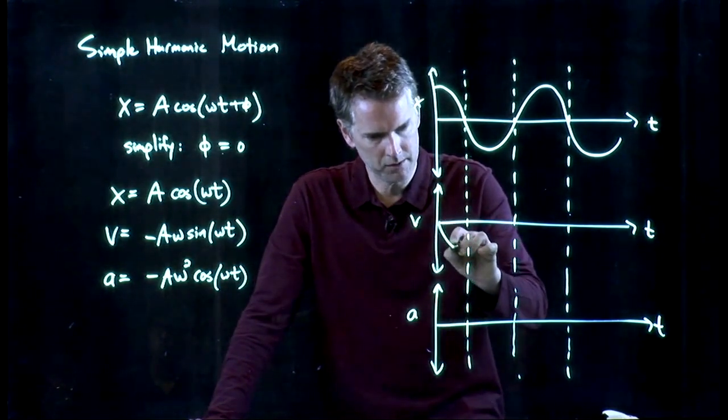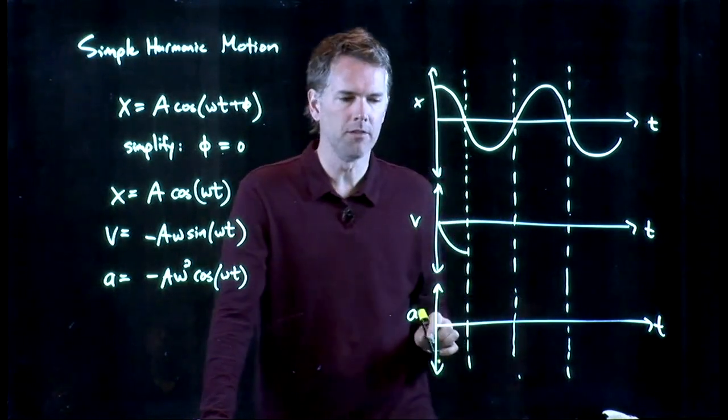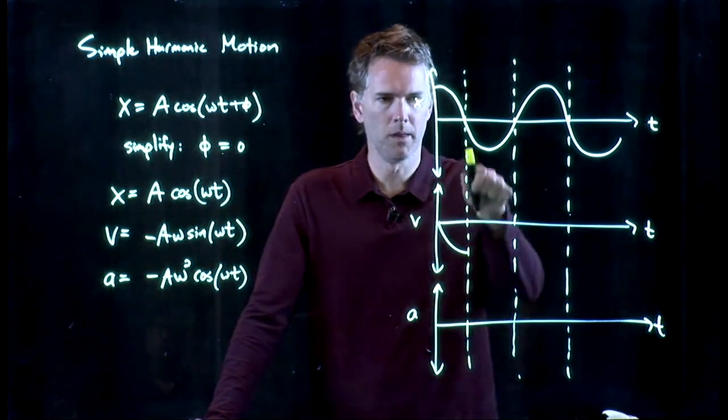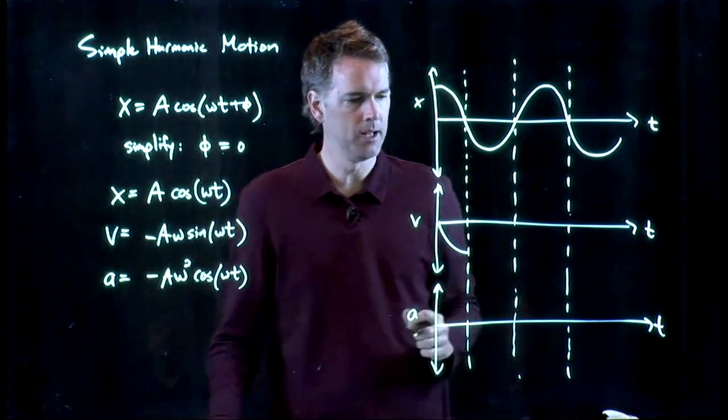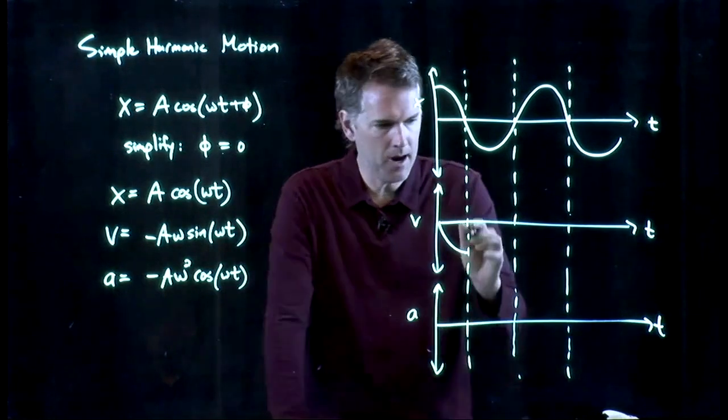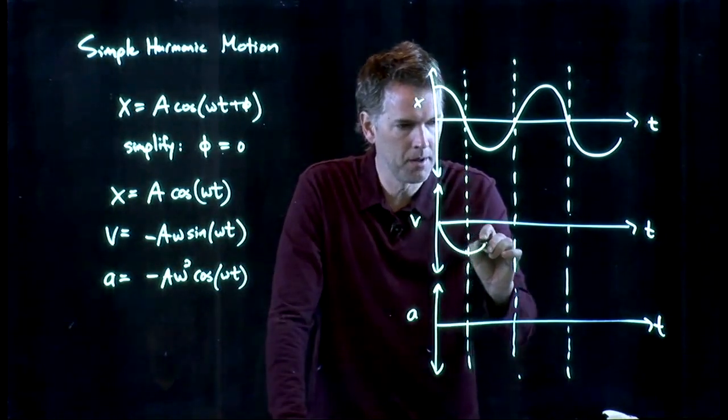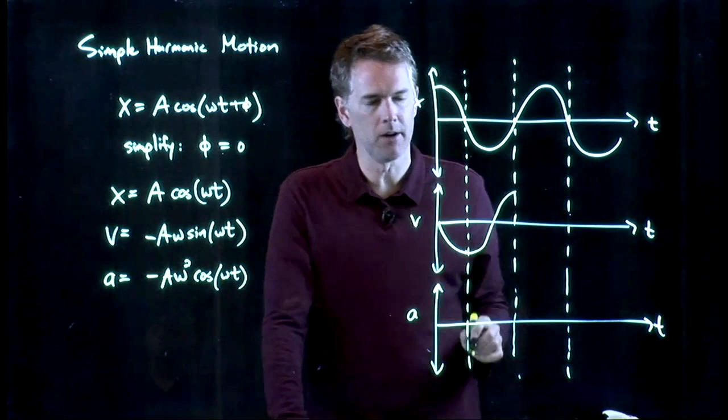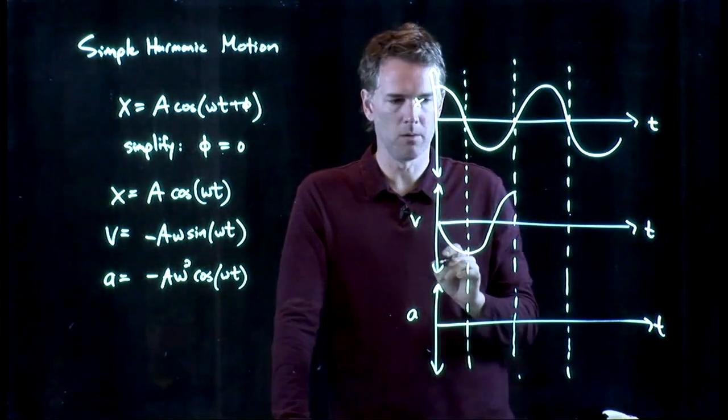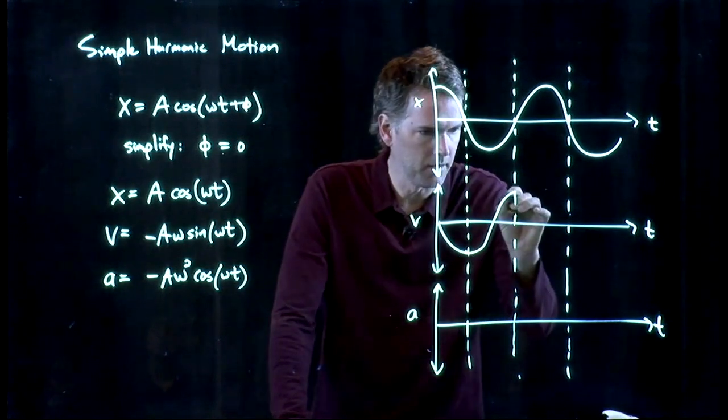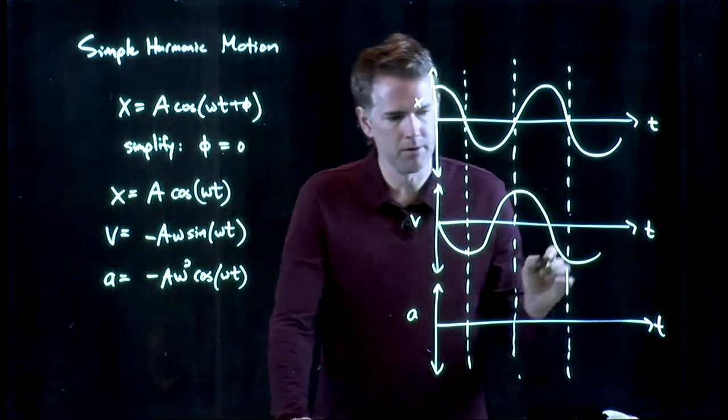So it goes like this and it reaches its maximum negative value when the position is going back through zero. This is where the block is going back through equilibrium. And now it's going to go up and reach its maximum value when the position is again zero but the block is going the other way. And then it does it again and so forth.